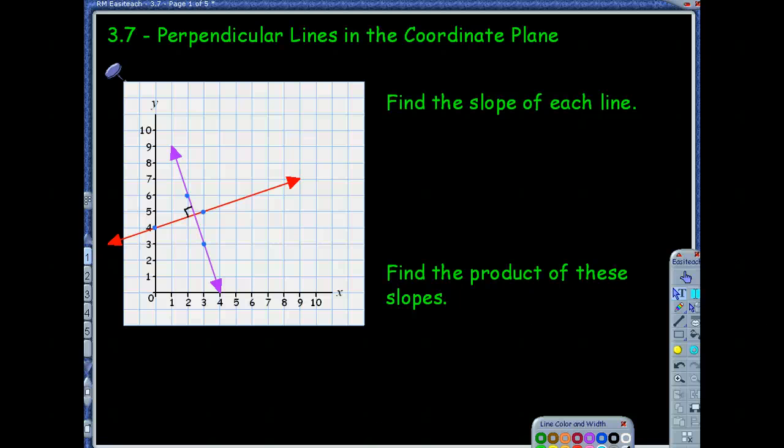Section 3.7 is going to continue this idea of coordinate plane, but this time we're going to apply our stuff about coordinate plane to perpendicular lines. So let's just kind of retract a little bit. Yesterday we refreshed from algebra that parallel lines had the same slopes.